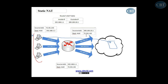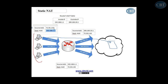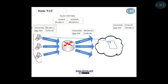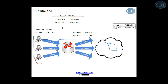Whenever traffic goes out, it uses the public address. Whoever from outside wants to get access to your web server, they think that the public address is the address of your web server, whereas the actual address is the private one. So the attacker from outside only sees the public address. That's why we use static NAT, and that's why you have to configure static NAT for the servers that you have inside your network.